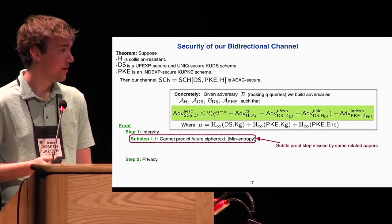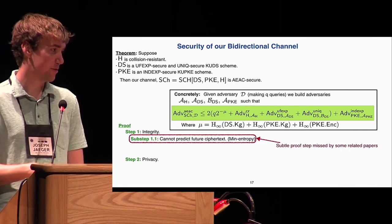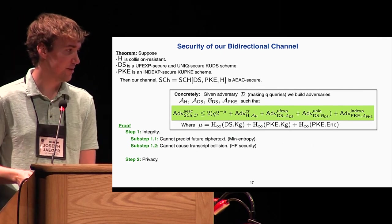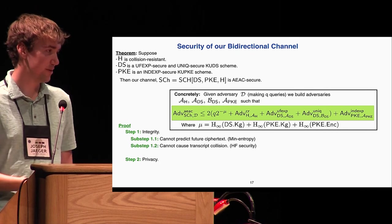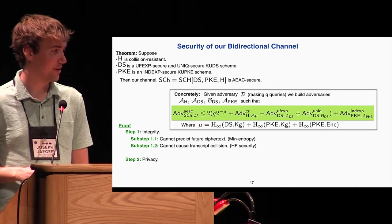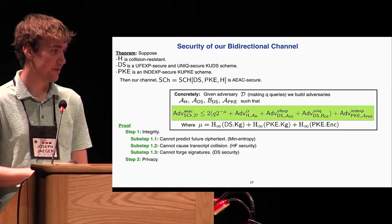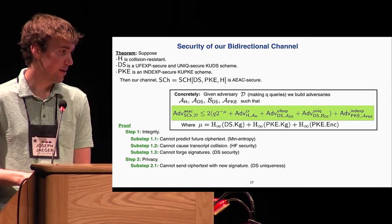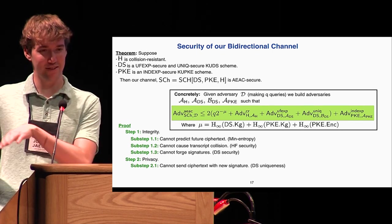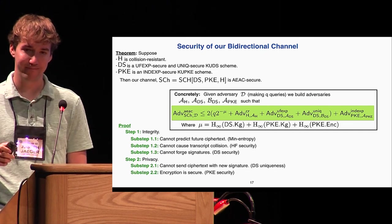As the first step, we have to argue that future ciphertexts cannot be predicted beforehand, which we do by a simple min-entropy of the various algorithms involved. Next, we use the hash function to say that collisions in the transcripts won't occur. Collisions in the transcripts would allow some trivial attacks. Once we've ruled out those possibilities, then we can directly use the digital signature to argue that the integrity part holds. One final step before we use our public encryption: we need to use the uniqueness of the digital signature to argue that an adversary can't take a ciphertext and just switch the signature part of it and leave the rest the same. And then we use the public encryption.